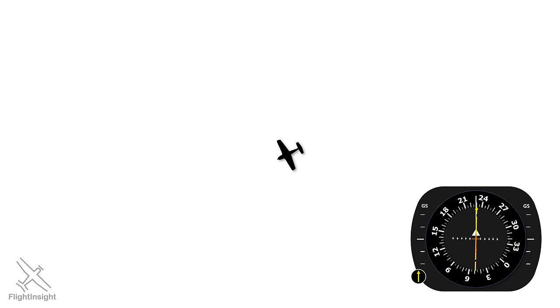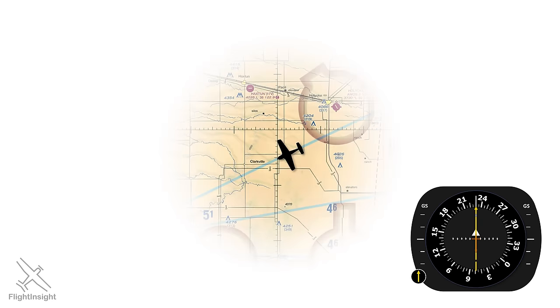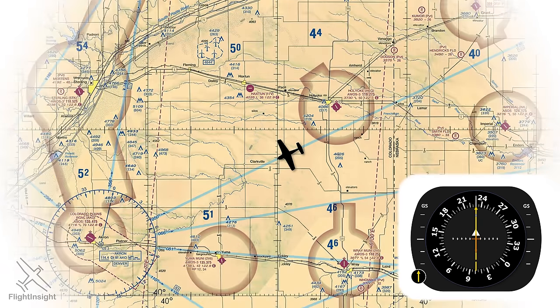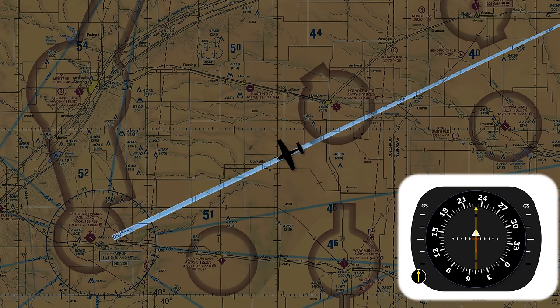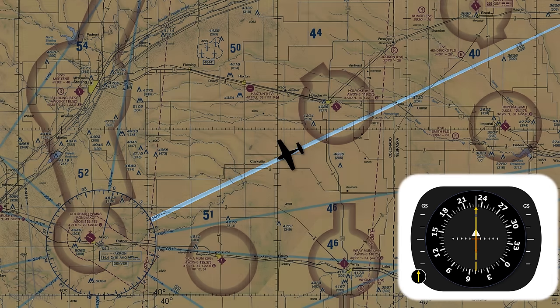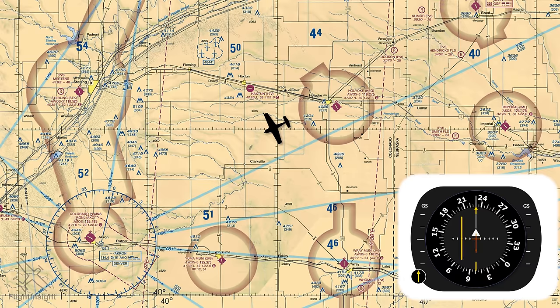Since the HSI also combines the VOR function, let's take a look at how that works. We're on that 230 heading flying along this airway, the 050 radial, inbound towards the VOR. If we start to move to the right of the airway, the green needle deflects to the left, just like a VOR receiver would.